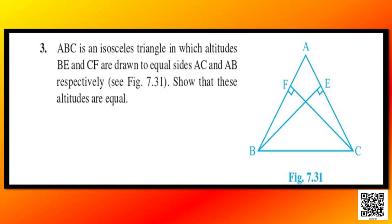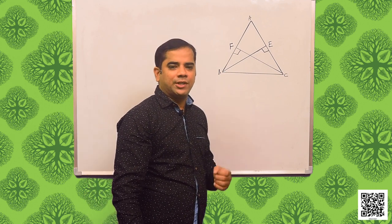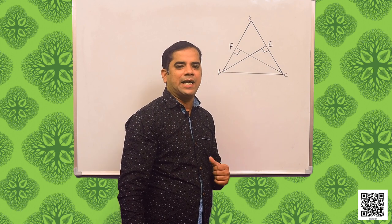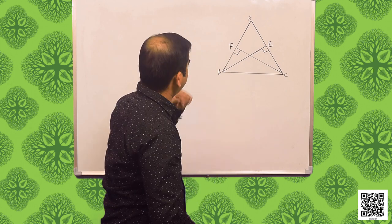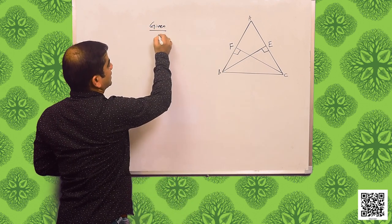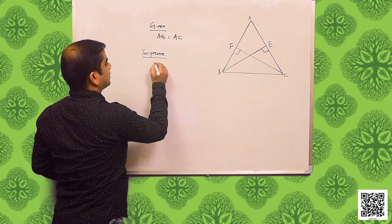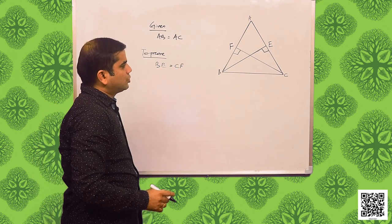The diagram is given in your book. I have drawn the diagram as given. BE and CF are drawn to equal sides AC and AB respectively. ABC is an isosceles triangle in which AB is equal to AC. BE and CF are altitudes drawn to equal sides AC and AB, so BE is drawn on AC and CF is drawn on AB. We need to prove that BE is equal to CF.